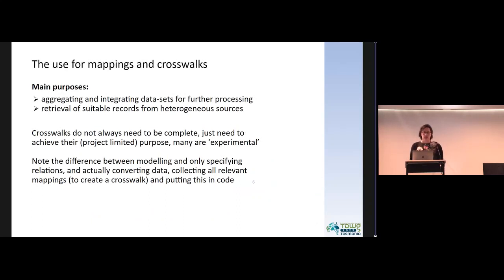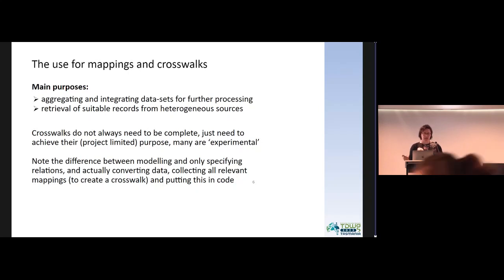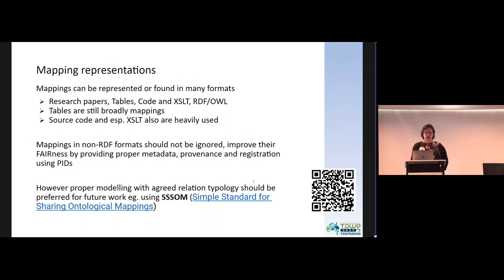The main purposes of creating these mappings and crosswalks are aggregating and integrating datasets for further processing, and retrieval of suitable records from heterogeneous sources. Crosswalks, distinct from mappings, need not always be complete — they just need to achieve their project-limited purpose and may be experimental. There's also a difference between modeling and specifying relations versus actually converting the data, collecting all relevant mappings, and putting this into code. It would be really nice if these crosswalks and the code could be shared publicly.